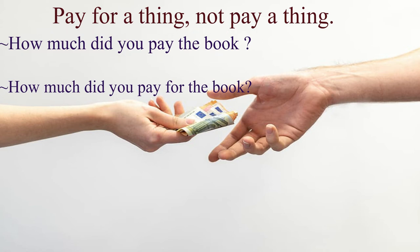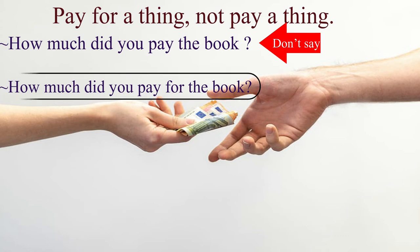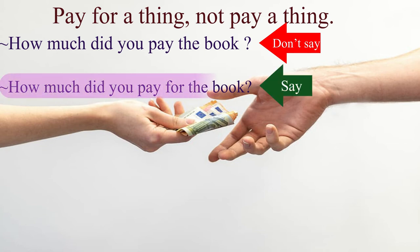We often speak like this but it is incorrect. A person can pay another person; he can also pay a bill, an account, or a subscription. But he pays for a thing that he buys. So the correct sentence should be: 'How much did you pay for the book?'